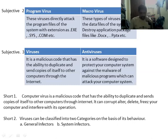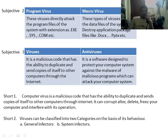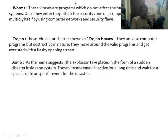Now we go to the question: state two ways of classifying computer viruses. A computer virus is a malicious code that has the ability to duplicate and send copies of itself to other computers through the internet; it can corrupt, alter, delete, or freeze your computer and interfere with its operation. Viruses can be classified into two categories on the basis of behavior: general infectors and system infectors.